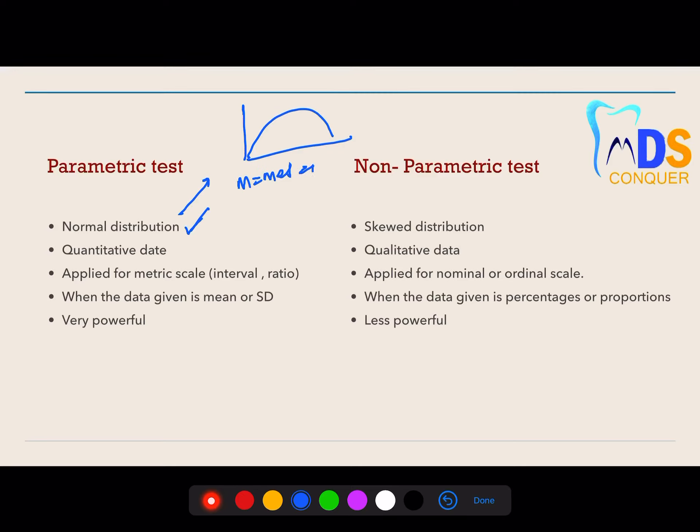Non-parametric tests are used when the data is skewed, either positive or negative, in which the mean does not equal the median does not equal the mode. Parametric tests are regularly used when the given data is quantitative data, whereas non-parametric tests are used when the given data is qualitative data like yes or no, good or bad, fair, average.